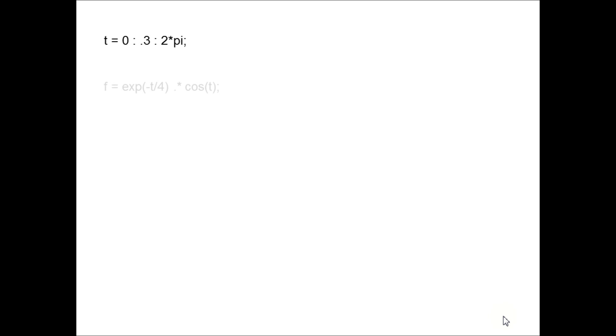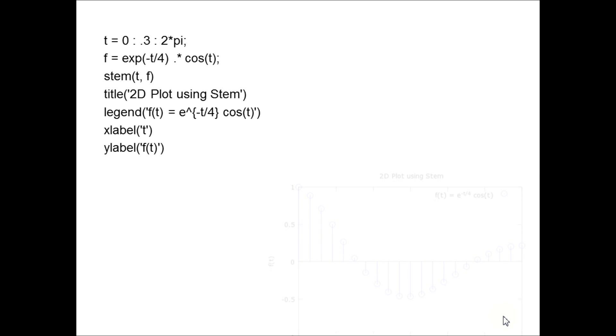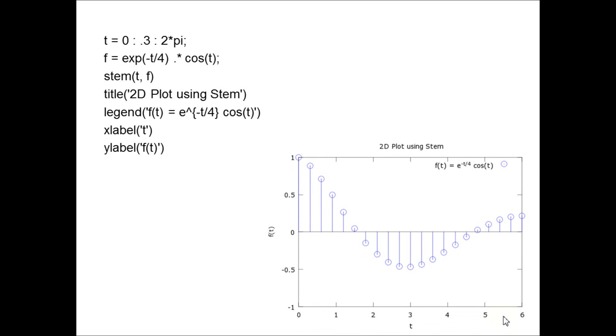Another example. You define your independent variable. Now you define your dependent variable. You are going to use stem, that is vertical lines. You add a title. You add a legend for the line. An x label. Y label. And this is what you get.